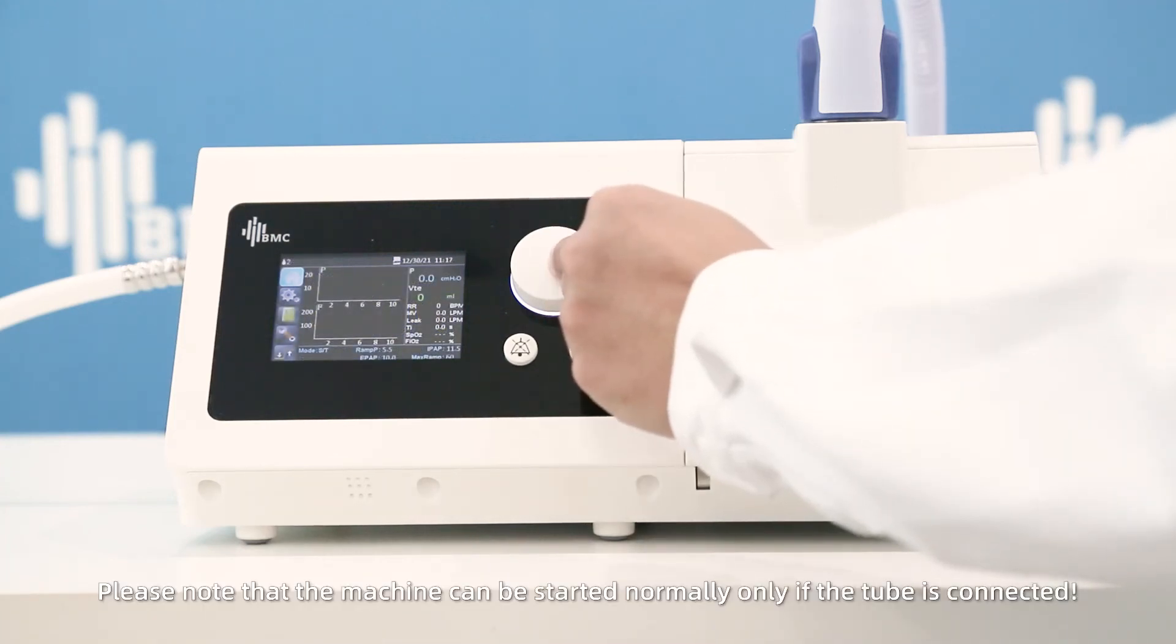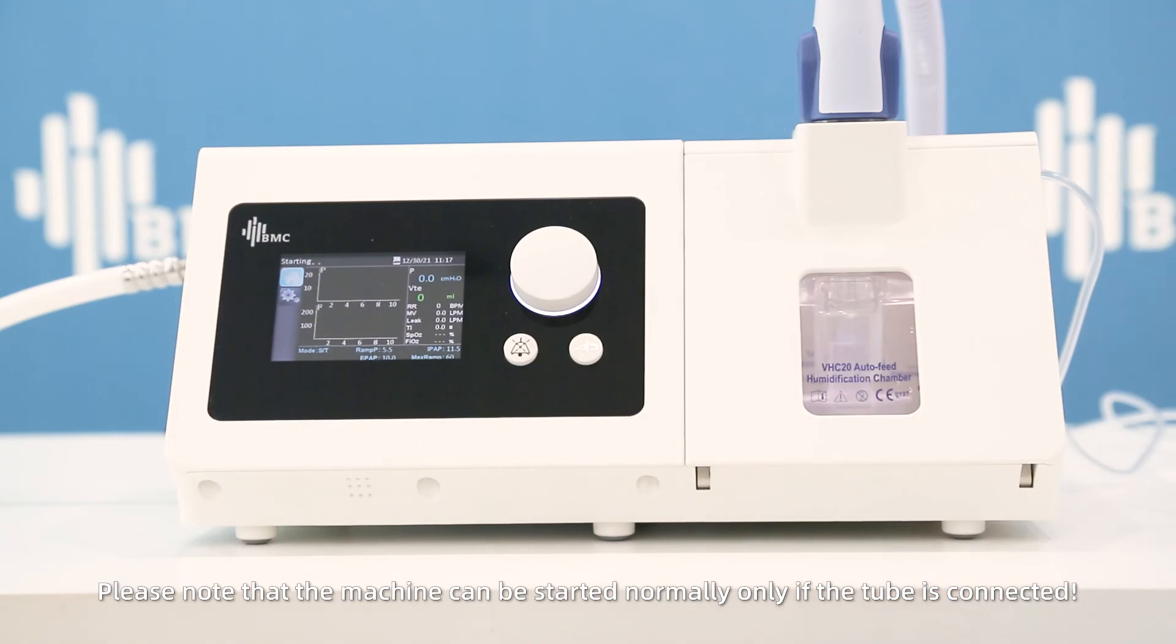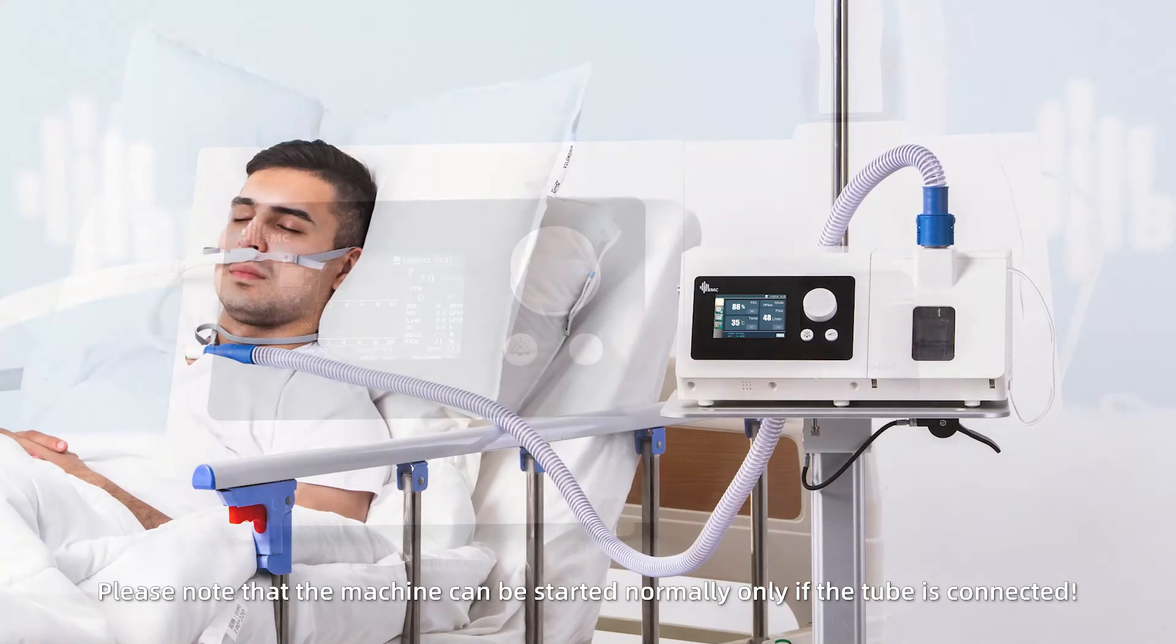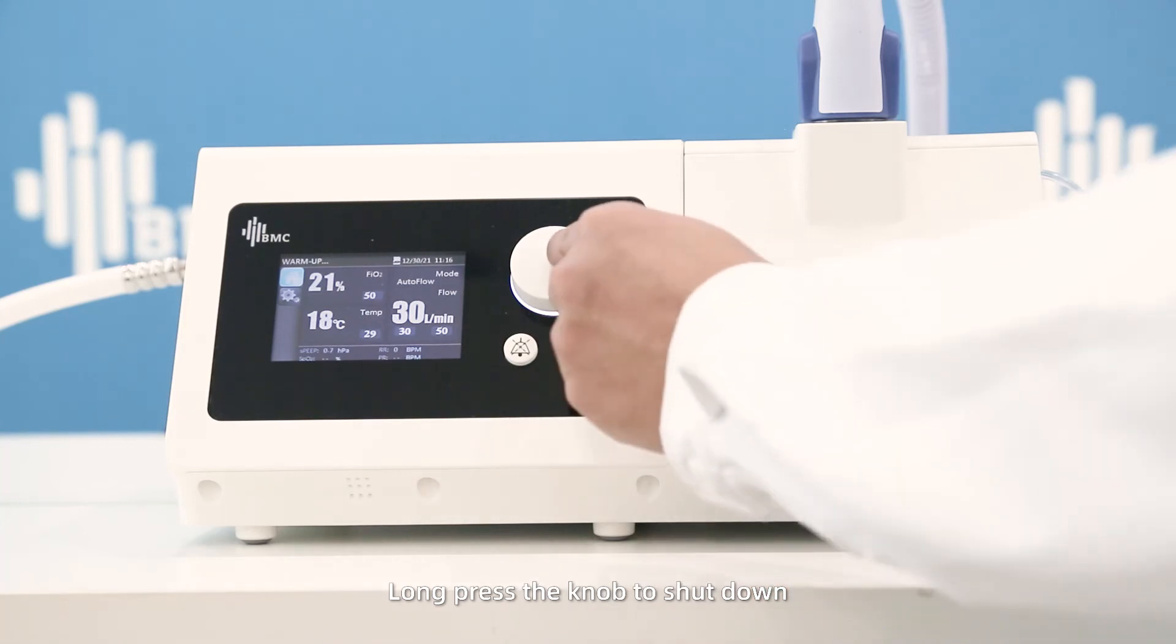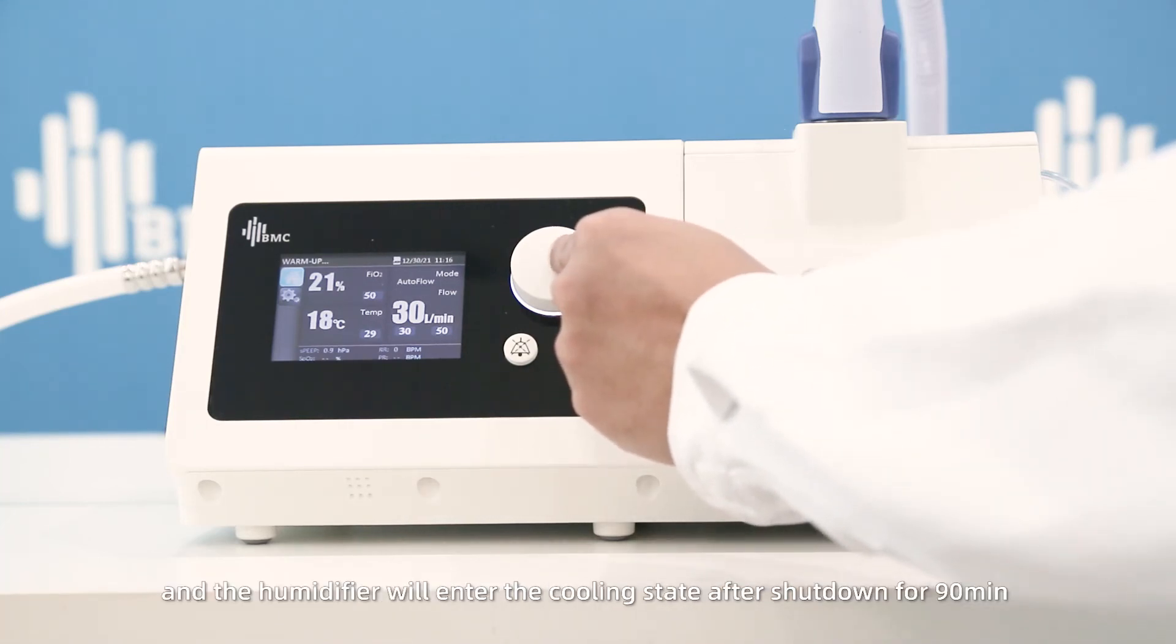Press and hold the knob under the non-invasive ventilator interface to start the machine. Please note that the machine can be started normally only if the tube is connected. Long press the knob to shut down, and the humidifier will enter the cooling state.